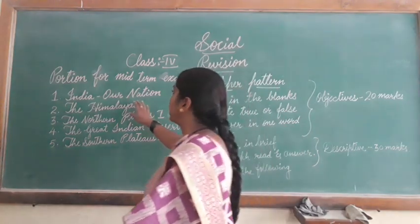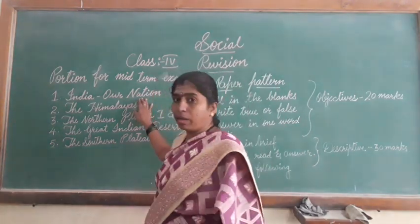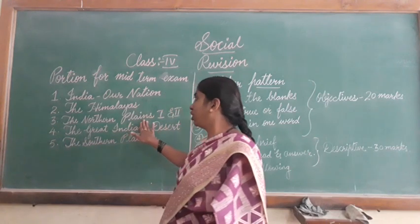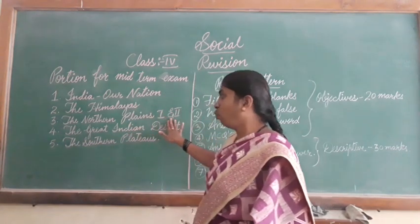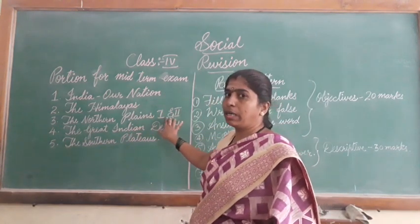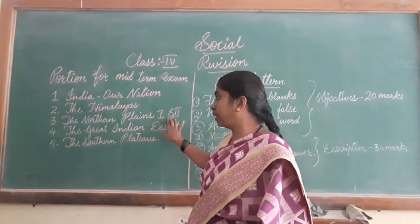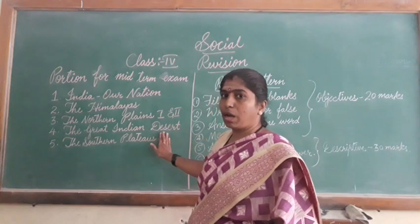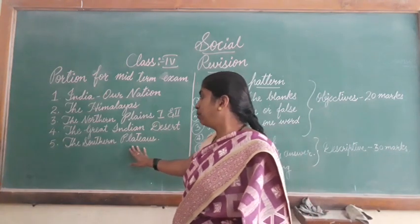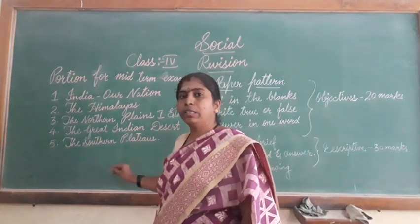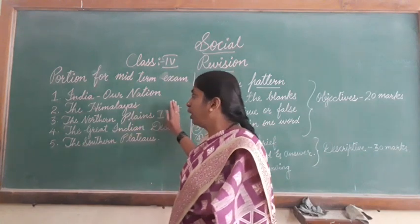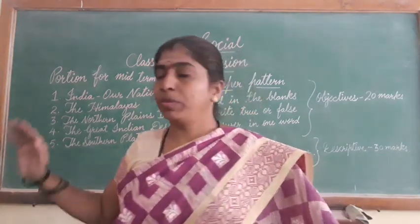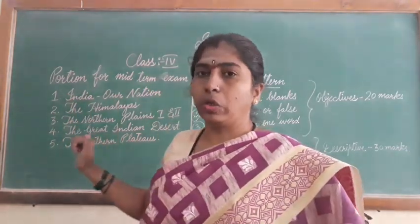So the portion is: first lesson is India Our Nation, then the Himalayas, then the Northern Plains lessons 1 and 2 — these are your 3rd and 4th lessons. Next, the Great Indian Desert, which is your 5th lesson, and the Southern Plateau, which is your 6th lesson. So these are all the lessons for your midterm exam and you are going to do the revision one by one.